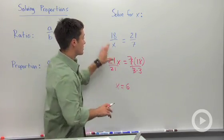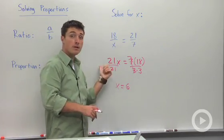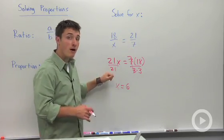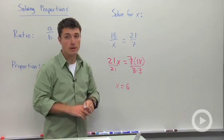There's multiple ways to solve proportions. But this way that I just showed you will always work, where you cross multiply and then you have to divide by whatever number is multiplying your variable.